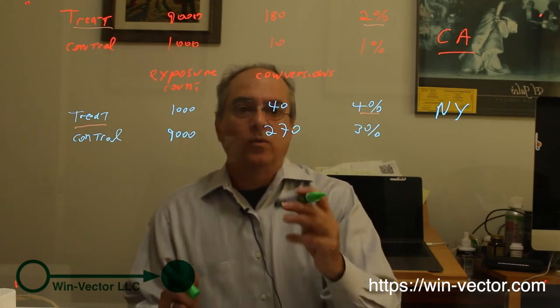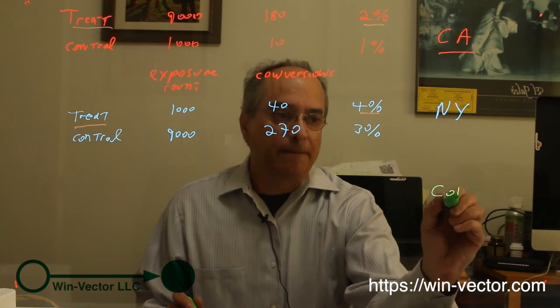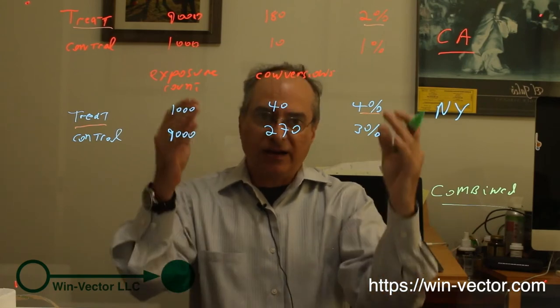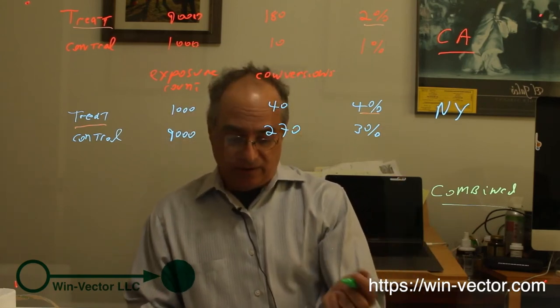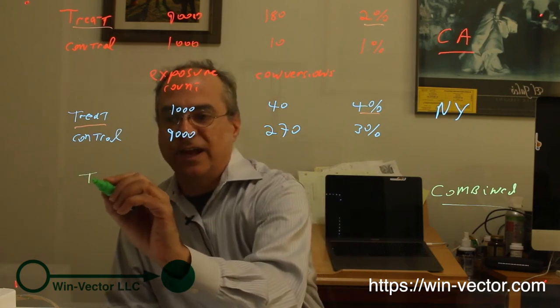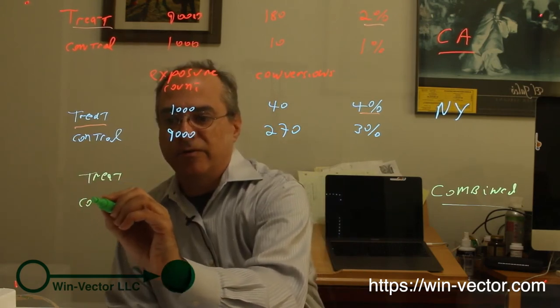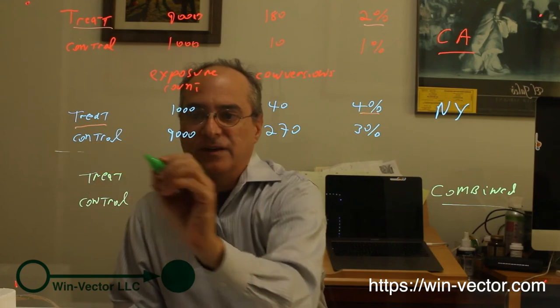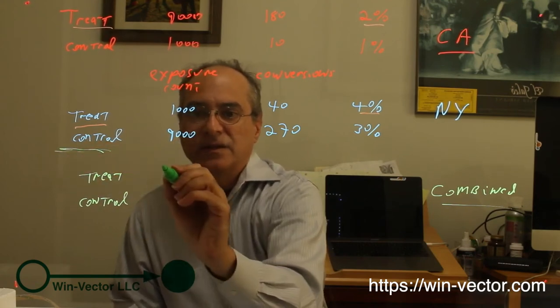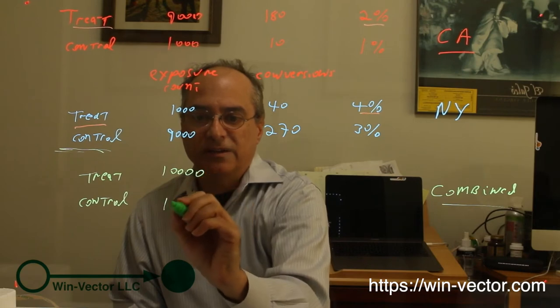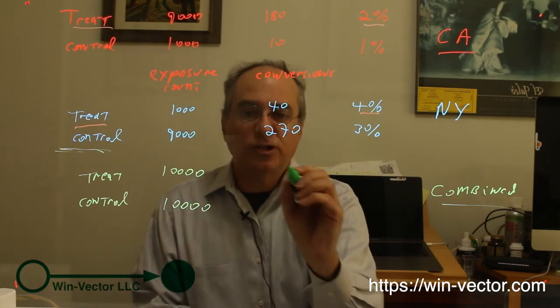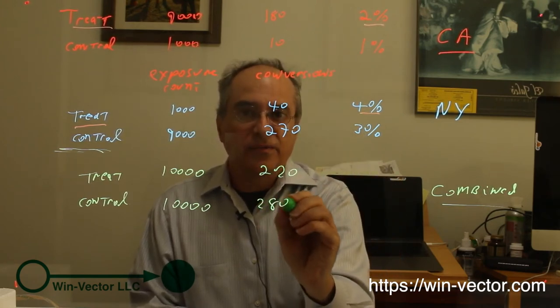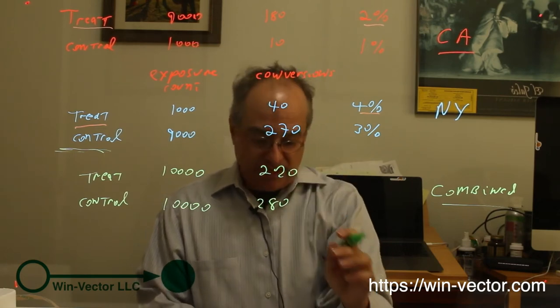All is well, until we build the combined dataset. It would be quite natural, especially in a business analytics situation, to aggregate all of this data into one report. Let's go ahead and do that. We're just going to add everything up. It's important to remember counts add up, not rates. In this aggregated set, we have 10,000 in treatment, 10,000 in control. The number of conversions is 220, which is 180 plus 40, and 280, which is 10 plus 270.